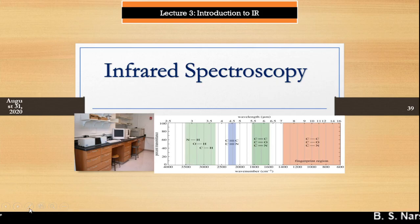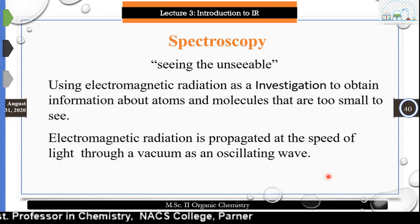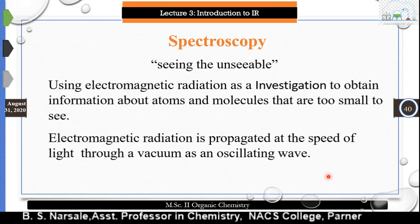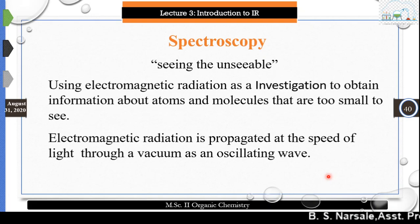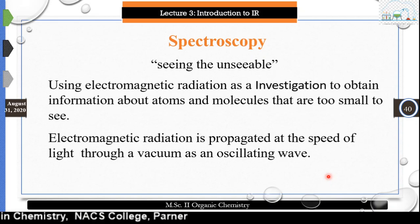I think all of you are familiar with IR spectroscopy. Spectroscopy is actually a way of seeing the unseeable — those things we cannot see, we have to see by using spectroscopy. It is just electromagnetic radiation. We strike it over a molecule or atom which are very small to see, and we investigate the changes. Electromagnetic radiation is propagated at the speed of light through a vacuum as oscillating waves.